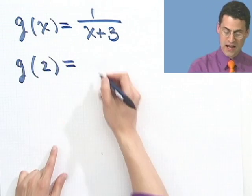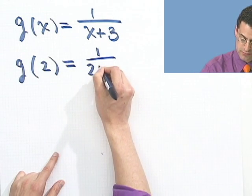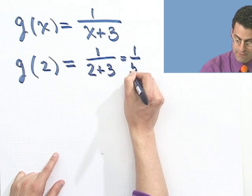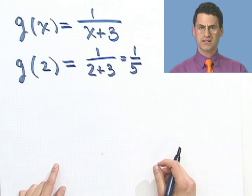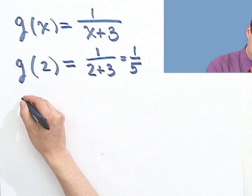Well, g of 2, wherever I see an x, I'm just going to insert a 2. And so that's 1 fifth. You see, once you get the hang of this, this really is sort of a piece of cake.